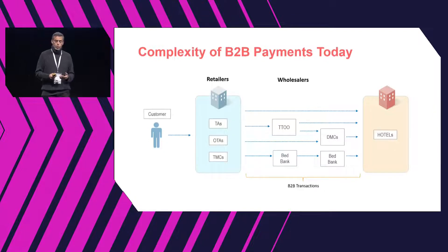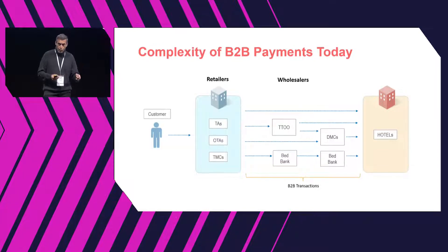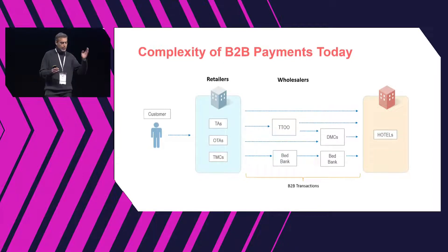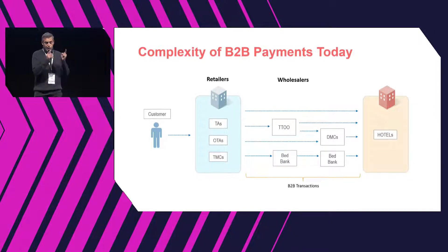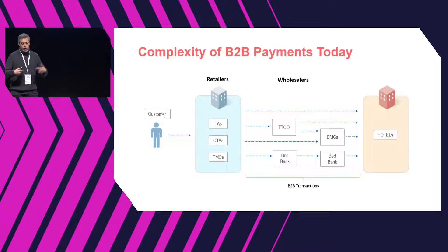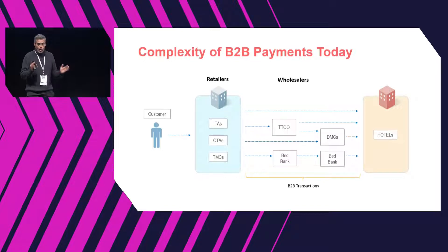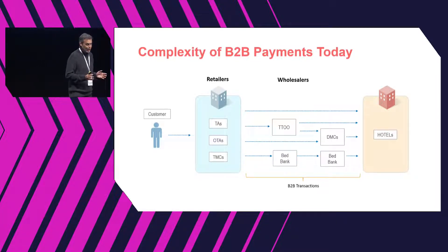In fact, it's not unusual to see situations where an OTA books a hotel through a bed bank which in turn is booking through another bed bank. Sometimes you can have three to four hops between the end customer and the hotel. Each of those hops is a B2B transaction, the payment terms between different intermediaries differ from one to another, and margins are quite low — so making this efficient is really complicated.